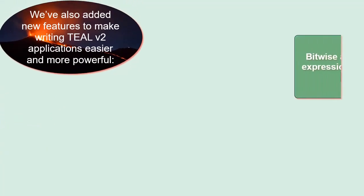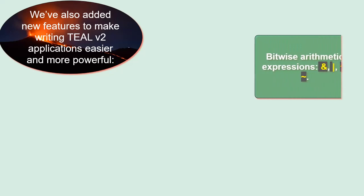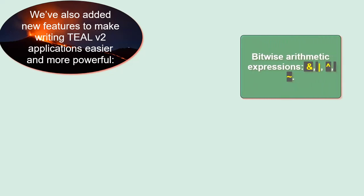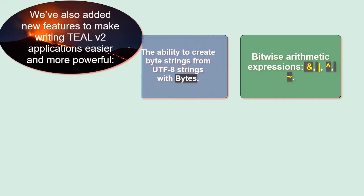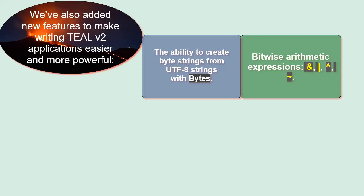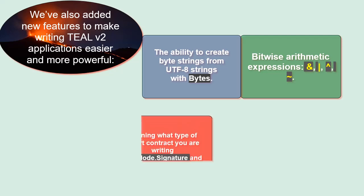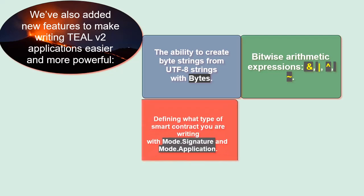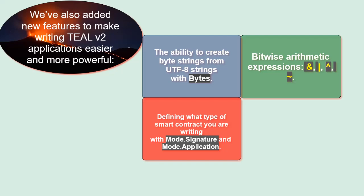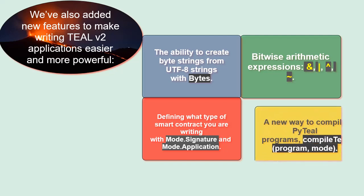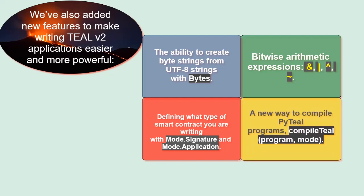Also, new features were added to make writing Teal v2 applications easier and more powerful: 1. Bitwise arithmetic expressions. 2. The ability to create byte strings from UTF-8 strings. 3. Defining what type of smart contract you are writing with mode.signature and mode.application. 4. A new way to compile PyTeal programs.